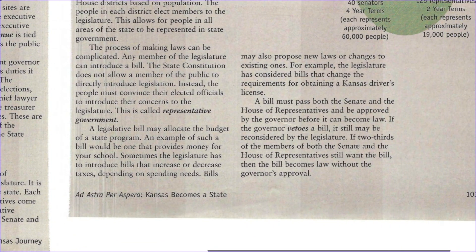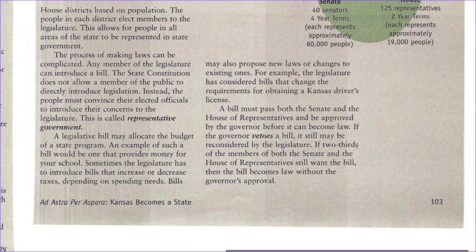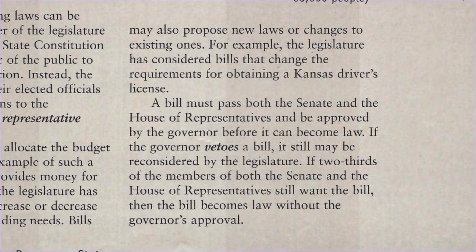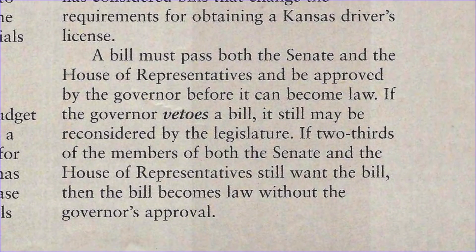Bills may also propose new laws or changes to existing ones. For example, the legislature has considered bills that change the requirements for obtaining a Kansas driver's license. A bill must pass both the Senate and the House of Representatives and be approved by the governor before it becomes a law. If the governor vetoes a bill, it still may be considered by the legislature if two-thirds of the members of both the Senate and the House of Representatives still want the bill. Then the bill becomes law without the governor's approval.